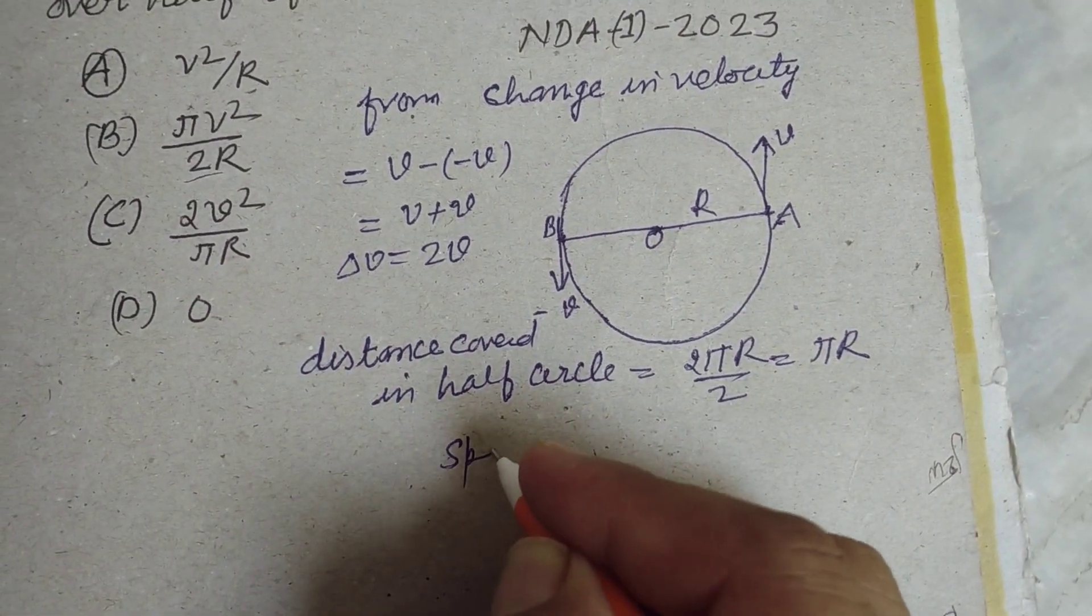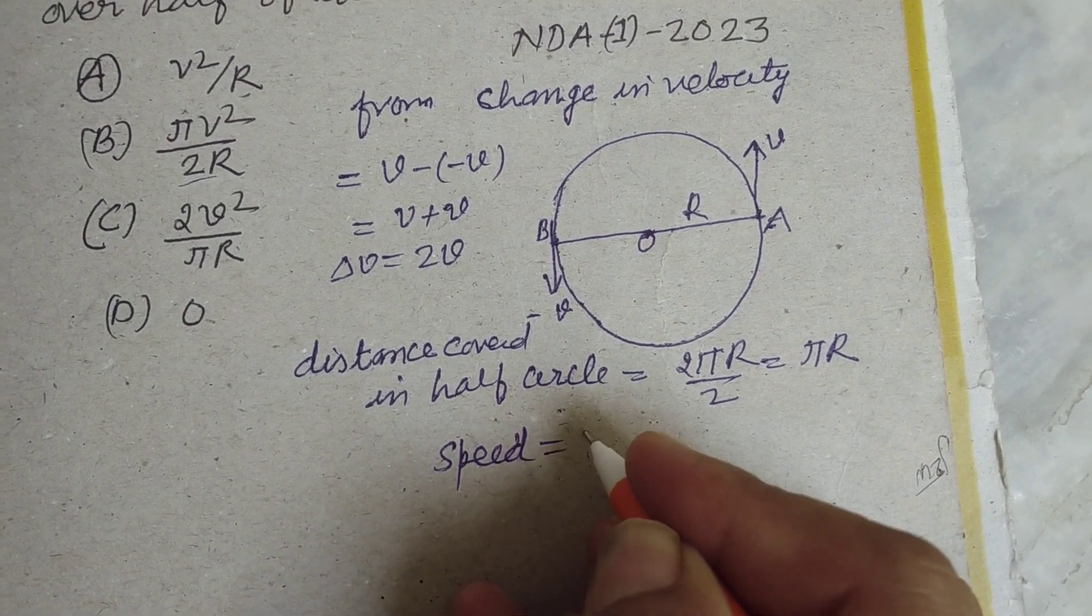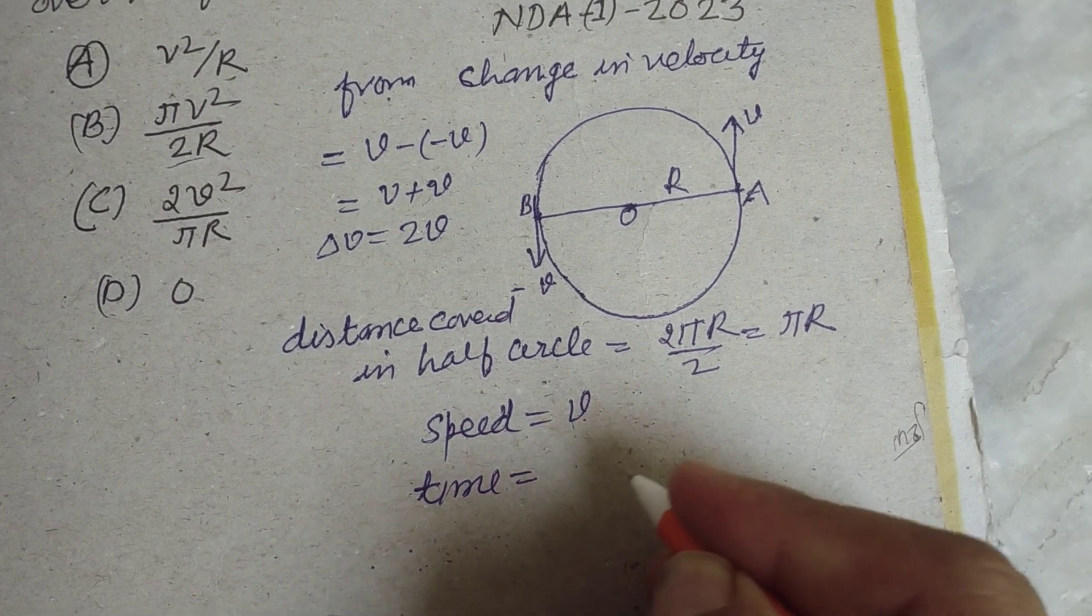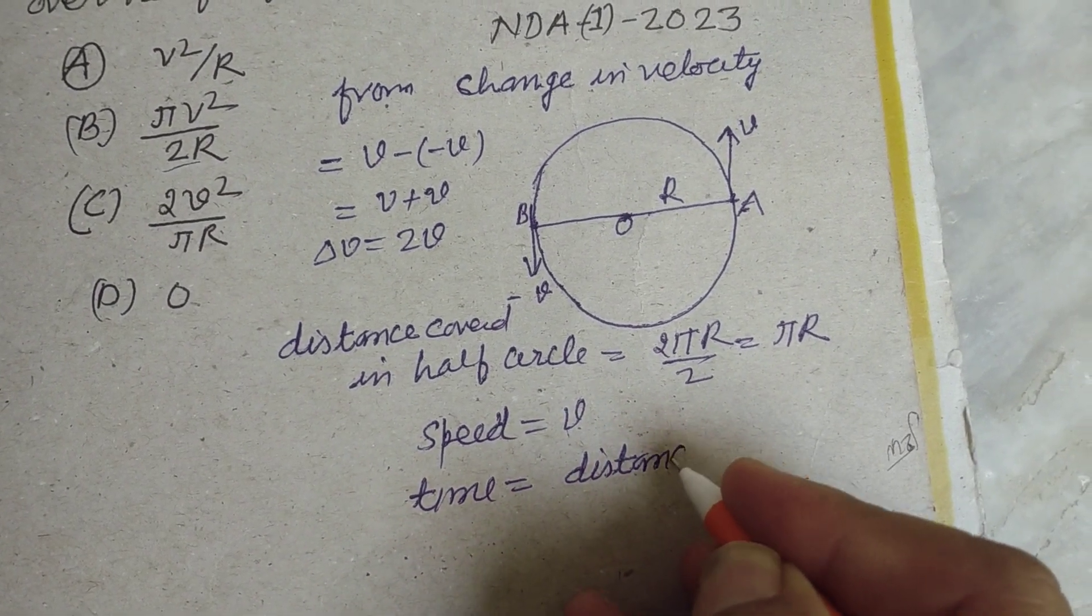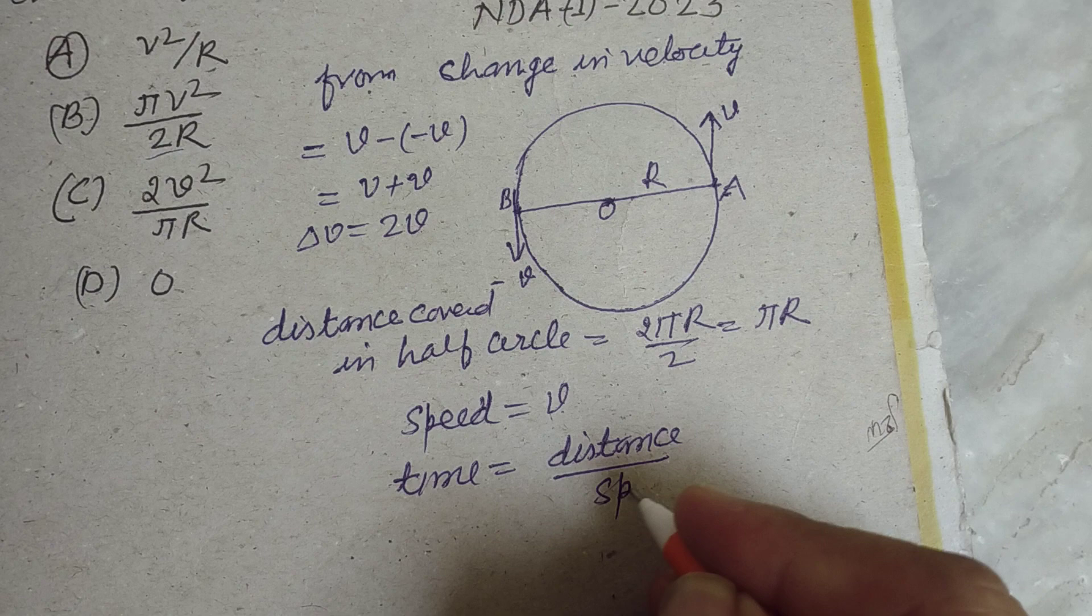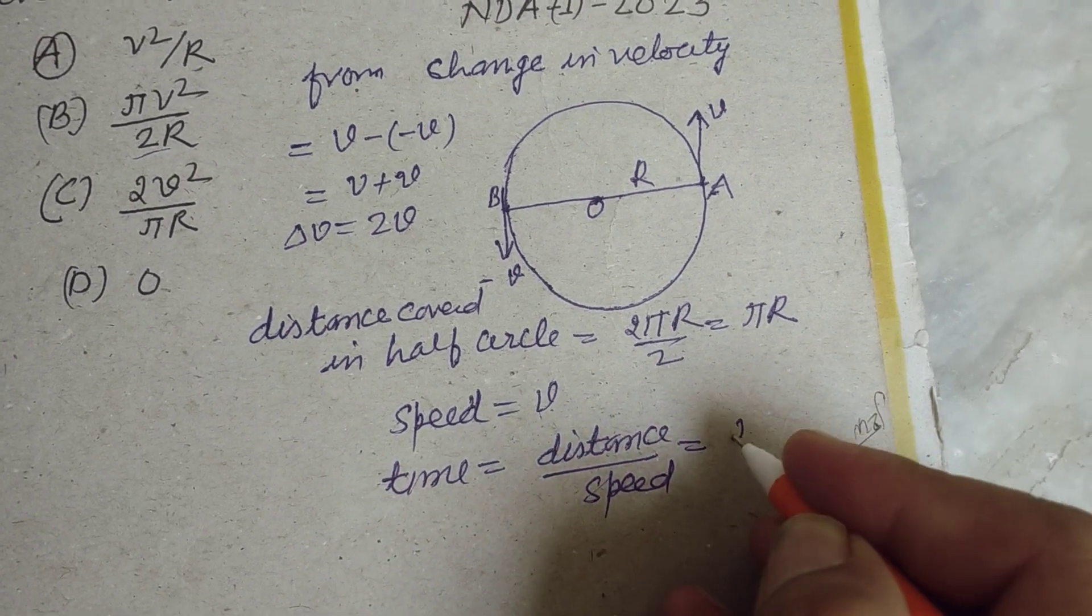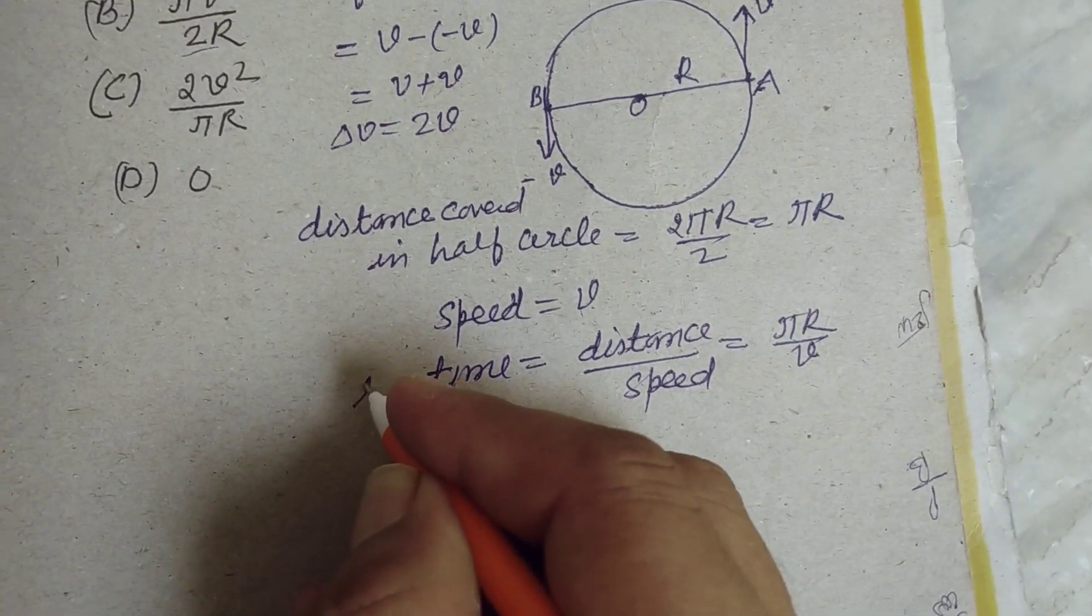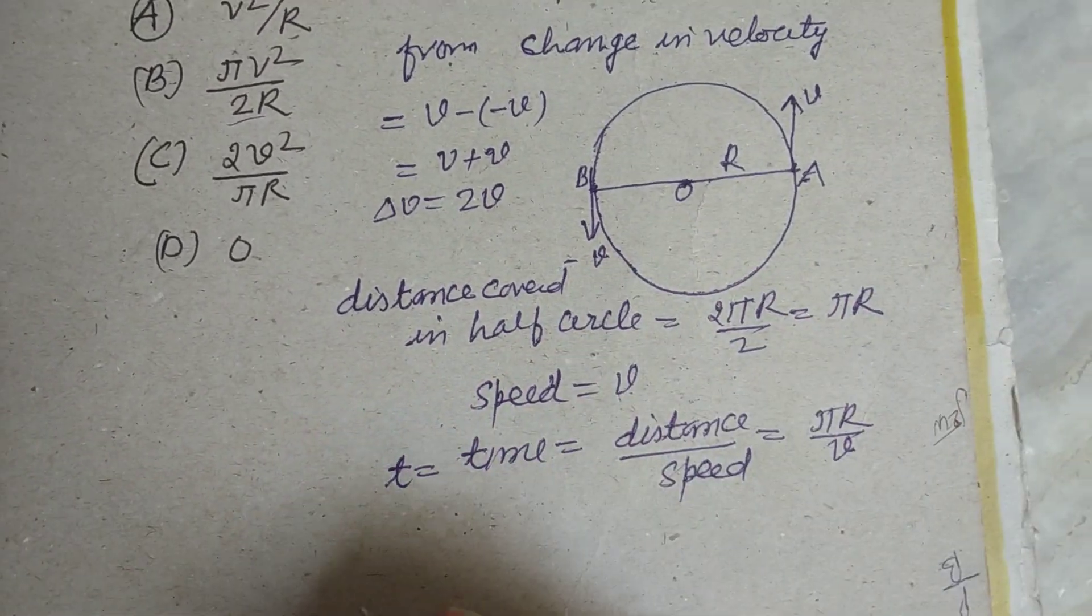Speed is V. Therefore time equals distance over speed. Distance is πR and speed is V. So time taken to cover the half circle is πR/V.